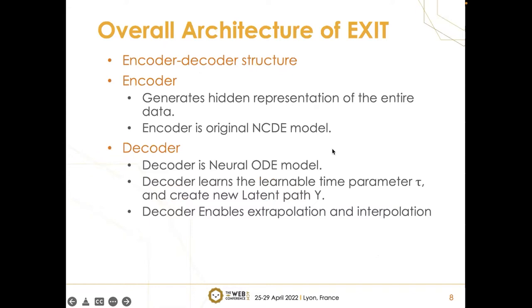Finally, I'll talk about XCEED. XCEED has an encoder and decoder architecture. The encoder generates hidden representation of the entire data and the encoder is the original neural CDE model. The decoder is a neural ODE model because neural ODE creates hidden representation not limited to time lengths. Due to these neural ODE characteristics, we use neural ODE as a decoder. This decoder learns the learnable time parameter tau and creates new latent paths Y. The decoder enables extrapolation or interpolation.